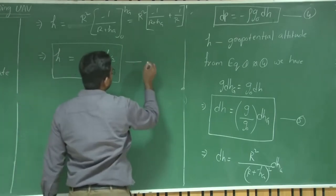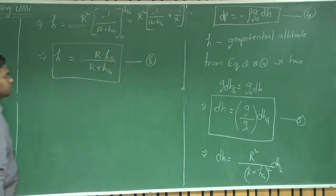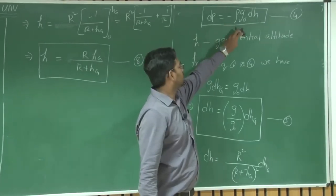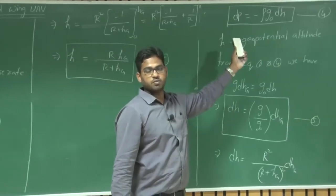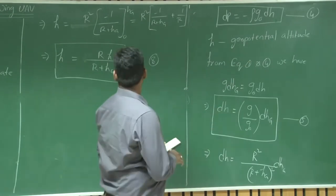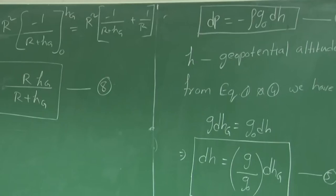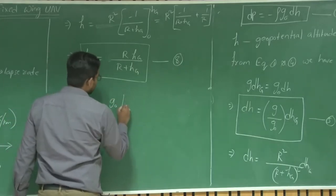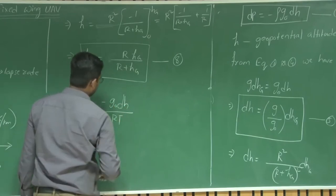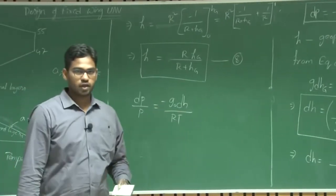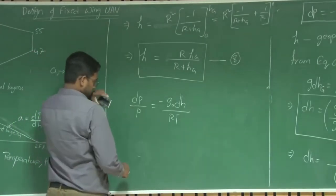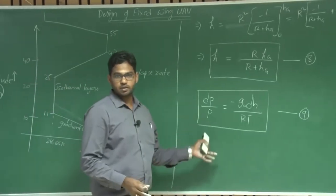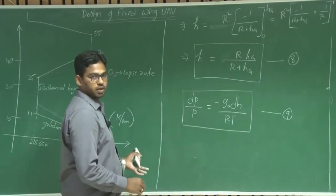This is the relation between the fictitious altitude and the real altitude. We derived this to ease the integration — we converted the actual hydrostatic equation in terms of geometric altitude to an equation with geopotential altitude. Using this in equation 3, dP/P = −g₀·dH/(RT), where g₀ is constant at 9.81 m/s². By integrating this equation, we can figure out how pressure varies with altitude, and then how density varies with altitude.